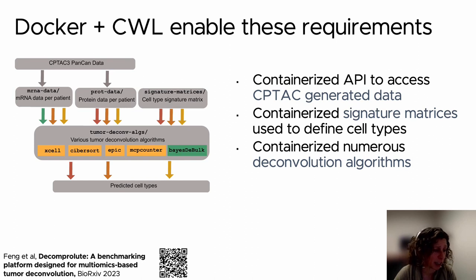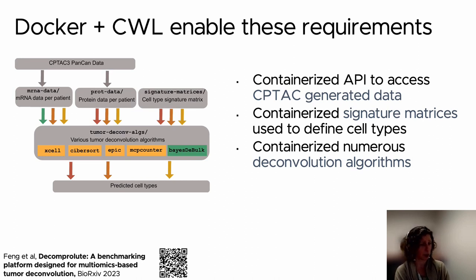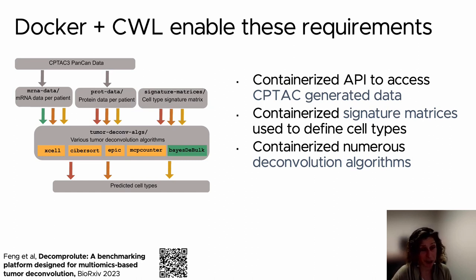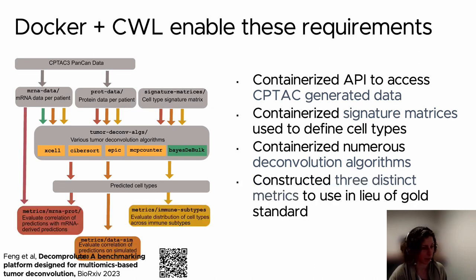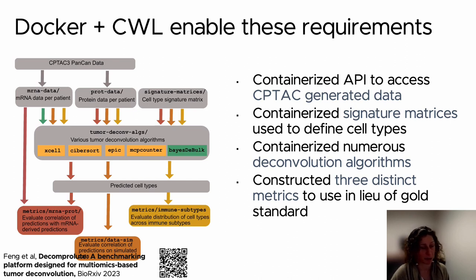We implemented and containerized four different algorithms published in the tumor deconvolution space, including CyberSort, which took an expression matrix — either protein or mRNA — as well as a signature matrix as input, and output predicted cell type fractions. We implemented three different metrics: one that compared mRNA to protein, one that compared measurements to simulated data, and a third that compared to those immune subtypes discussed earlier.